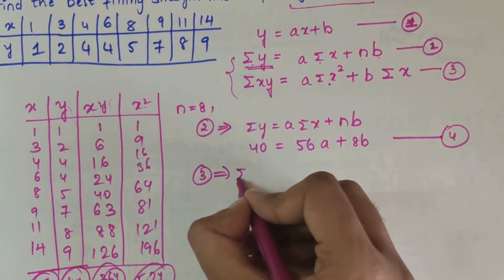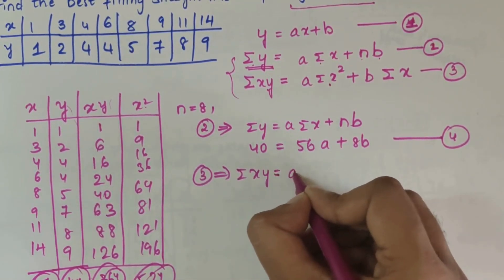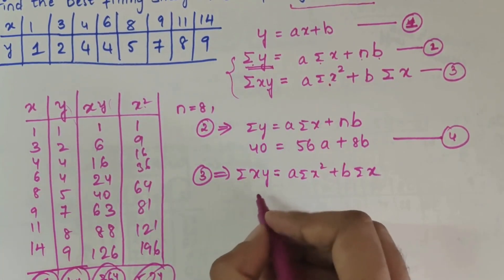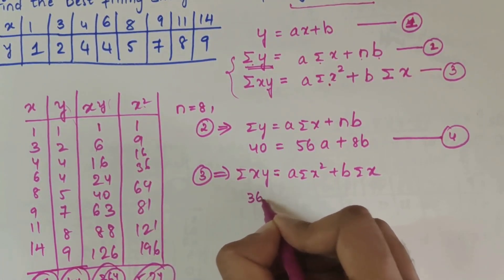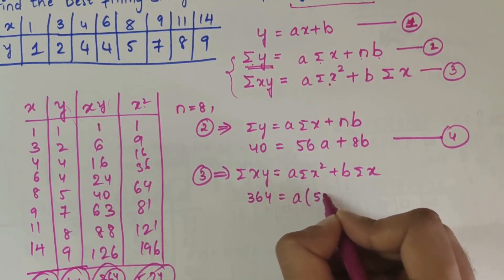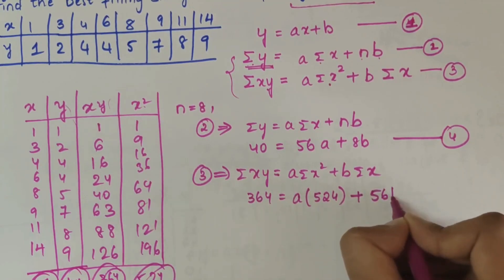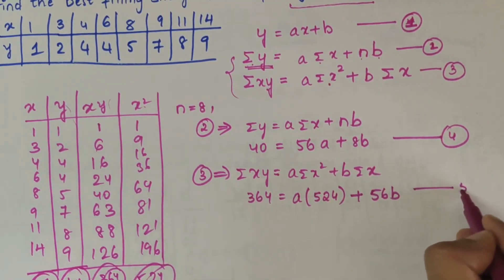Now the third equation: xy value is 364 equals a into 524 plus 56b. This is our fifth equation.